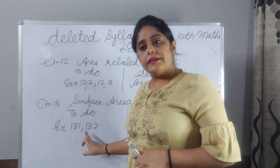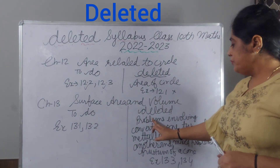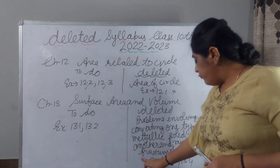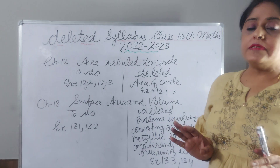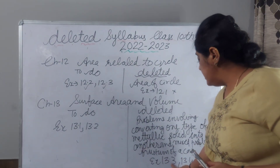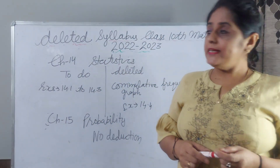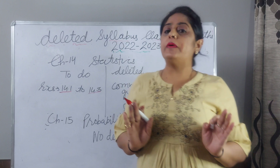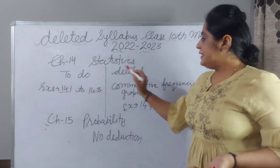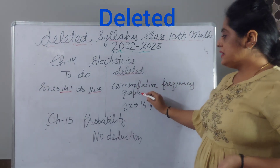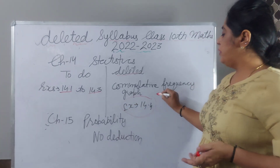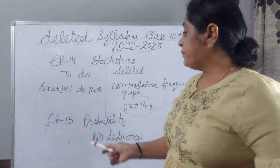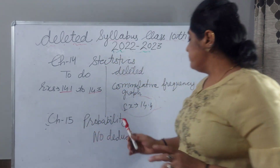Chapter 13, Surface Area and Volume: you have to do only exercise 13.1 and 13.2. What is deleted: problems involving converting one type of metallic solid into another, mixed problems, and frustum of a cone. Deleted exercises are 13.3 and 13.4. Chapter 14, Statistics: you have to do exercise 14.1, 14.2, and 14.3. What is deleted: cumulative frequency graph — exercise 14.4 is deleted from the 2022-23 syllabus.